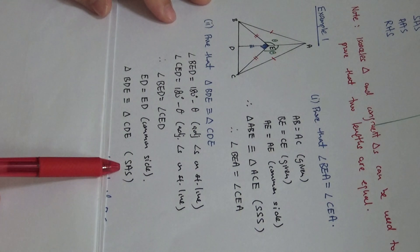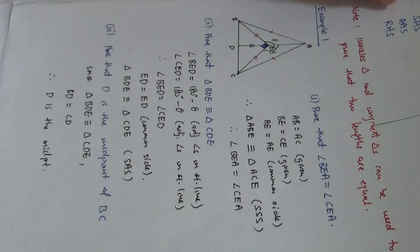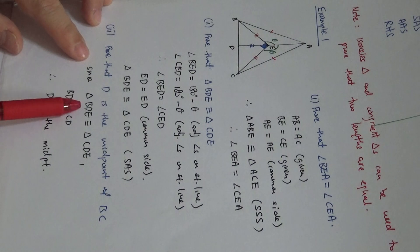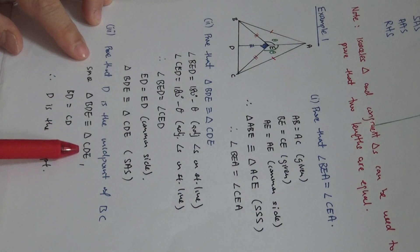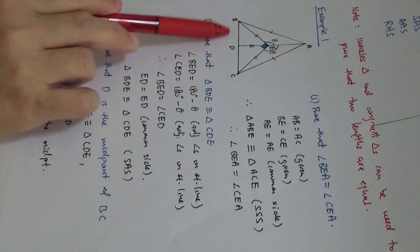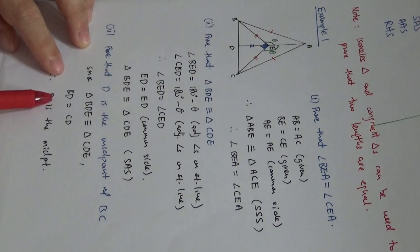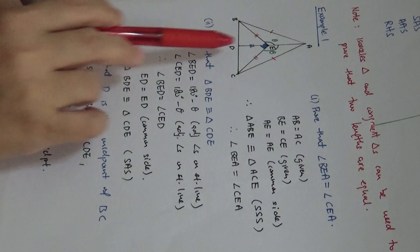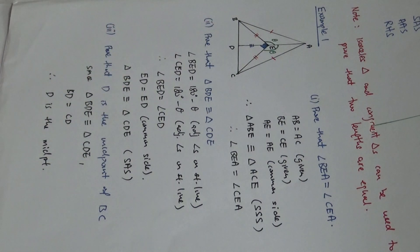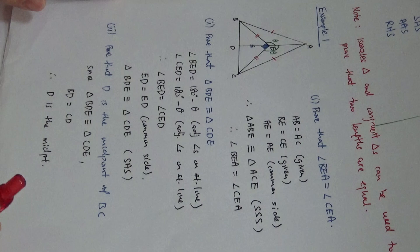Next, we must prove that D is the midpoint of BC. Since triangle BDE is congruent to triangle CDE, BD must equal CD. If BD equals CD, it shows that D is the midpoint — it cuts into two equal halves and therefore they are equal. This is how we prove all the parts in Example 1.